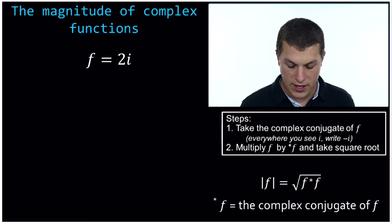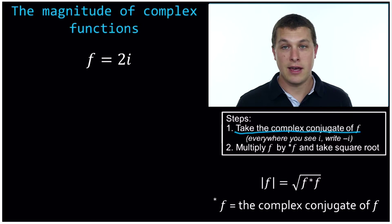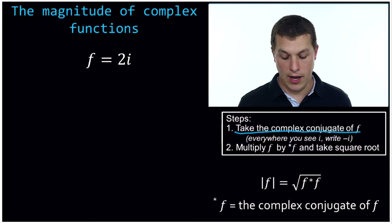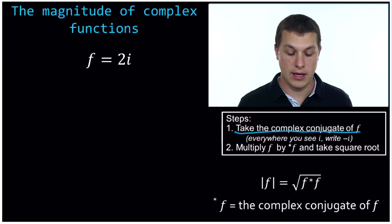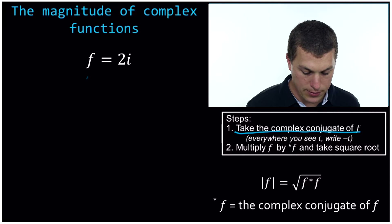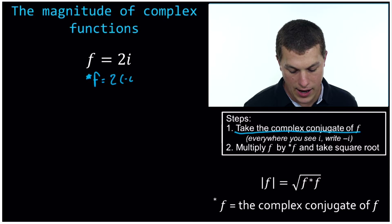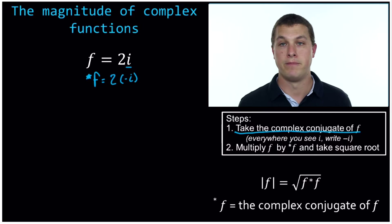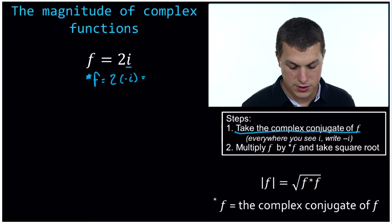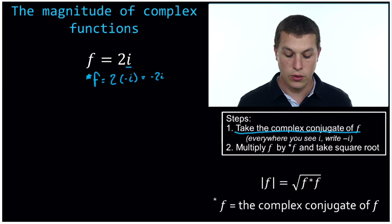The first thing we want to do is take the complex conjugate of f. The complex conjugate sounds complicated, but it's pretty straightforward. We just look, and everywhere we see an i, we put a negative i. So here f is equal to 2i, so the complex conjugate is just 2 times negative i. All I did is I saw an i there, and I put a negative i there. That's the complex conjugate, so it's just negative 2i.